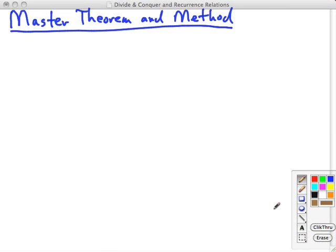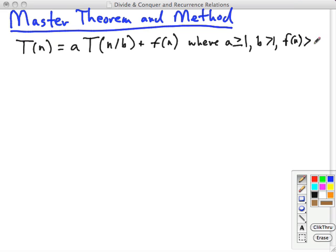The master method is based on the master theorem, a theorem proven in the Cormen et al. textbook, and this applies to recurrences of the familiar nature written like this.